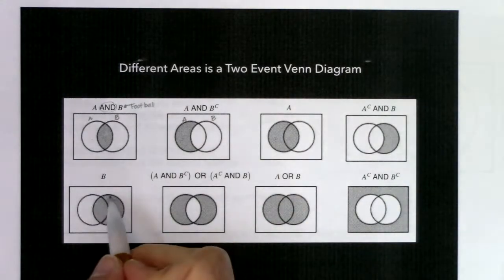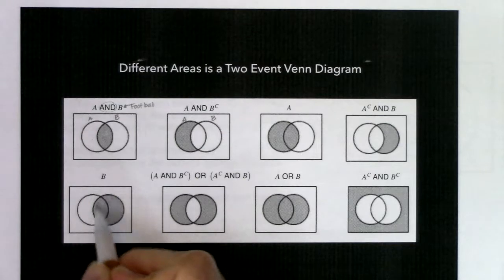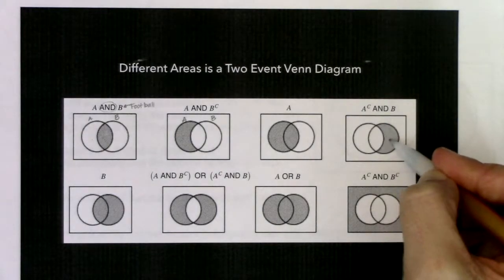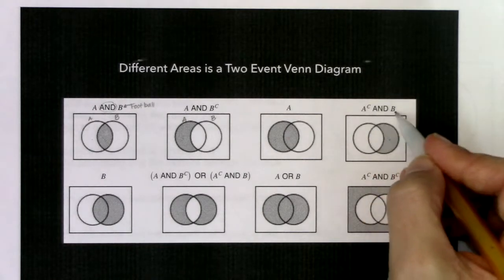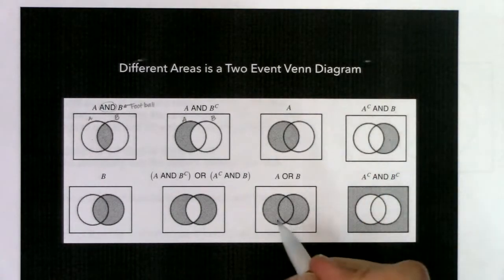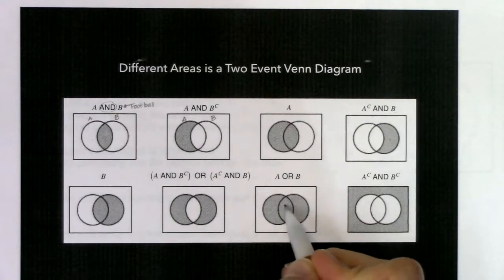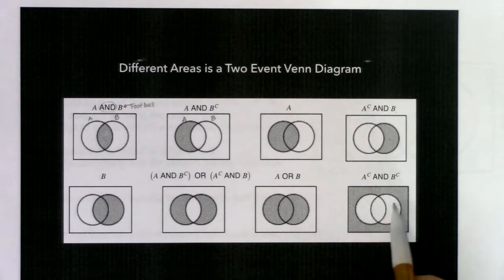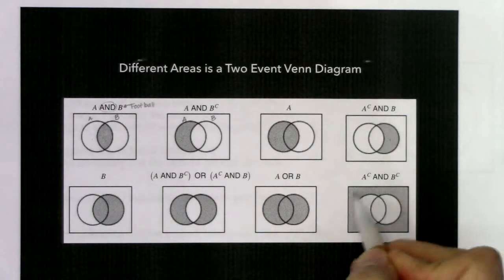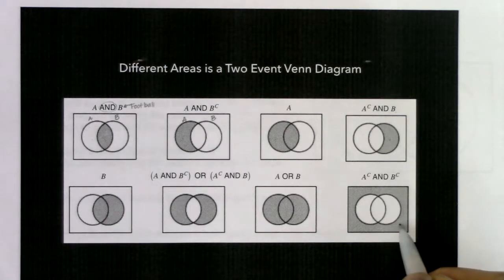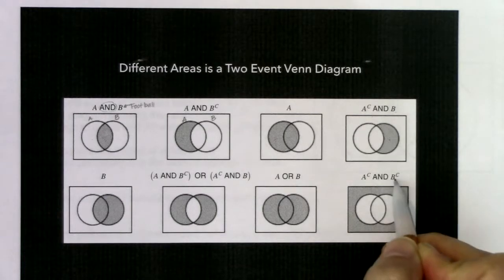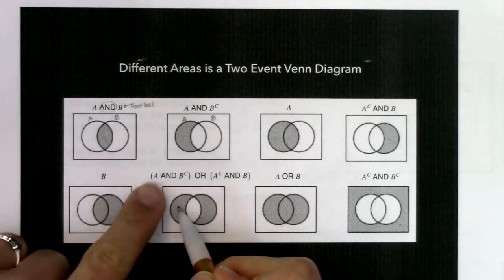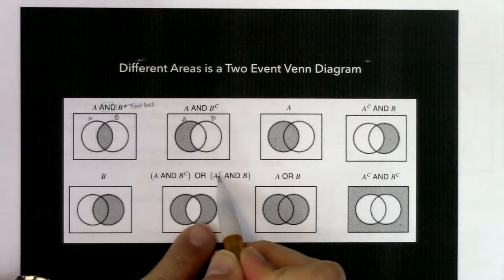Event A is that entire circle. Event B is the entire right circle. Where they overlap is the football. If my pencil is in the right moon, I'm in event B but not in the A circle — that's A complement and B. The 'or' means I'm in just A, just B, or both — all three of those parts together. Out in the rest of the universe, my pencil is not in A and not in B.